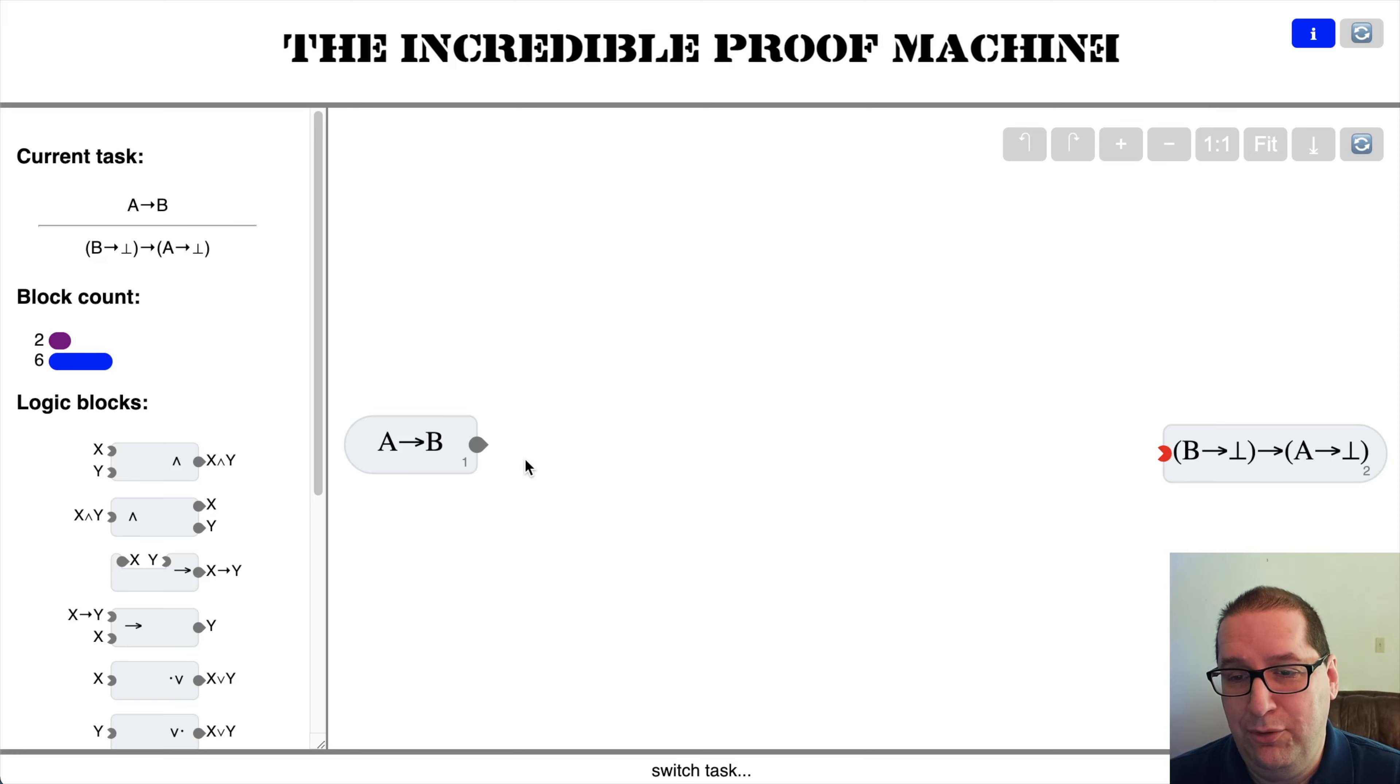A implies B. And we want to prove that B implies absurd implies A implies absurd. A lot of implies there. That tells me we're going to use implication introduction. And we're assuming B implies absurd, which kind of tracks. So maybe working backwards on this one is not the best. Let's try it again.